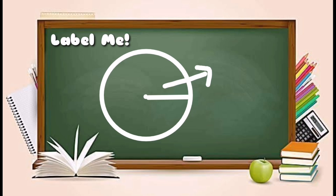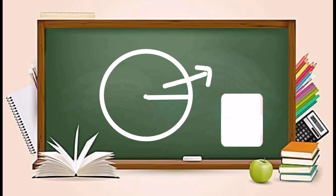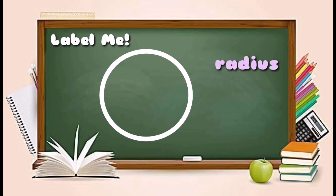Third part: It is the distance from the center point of the circle to the outer edge. Label Me. And the correct answer is Radius.